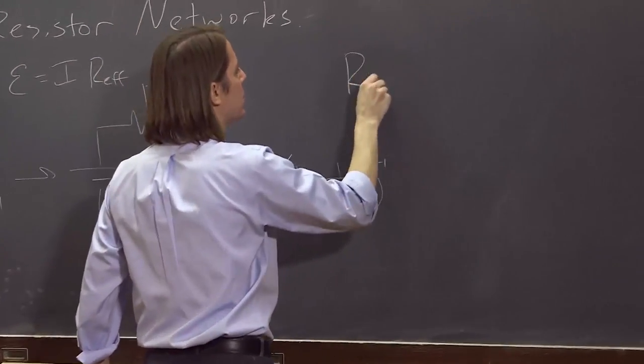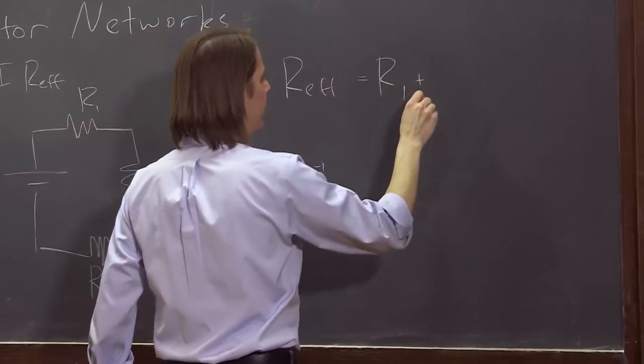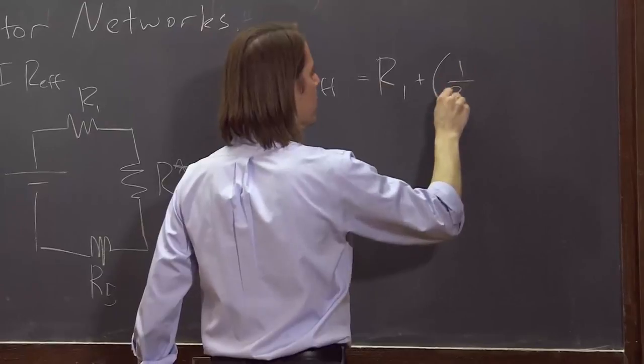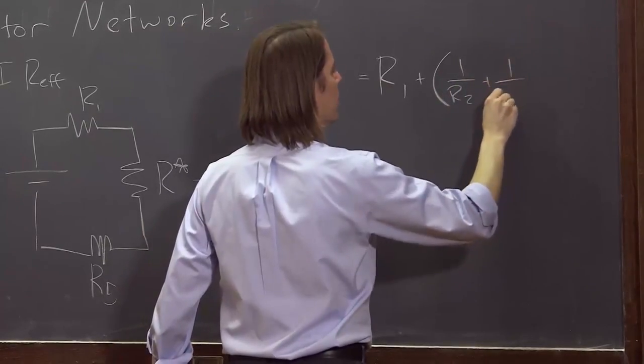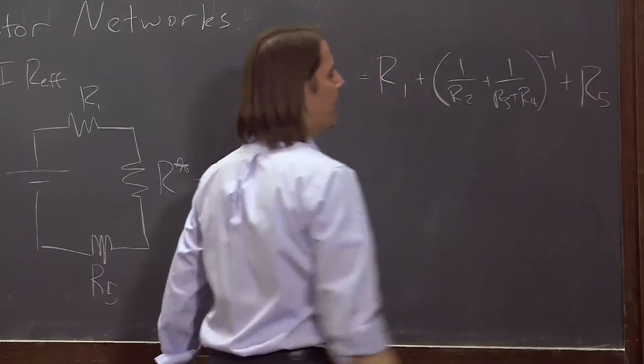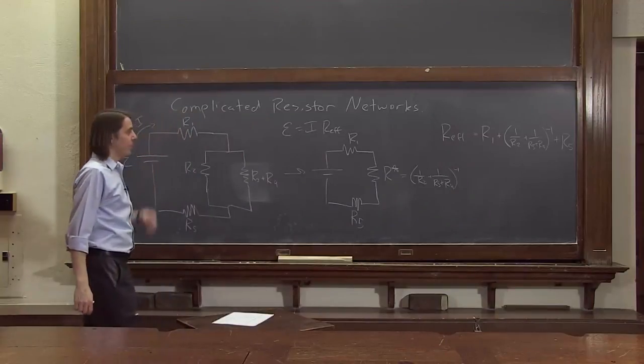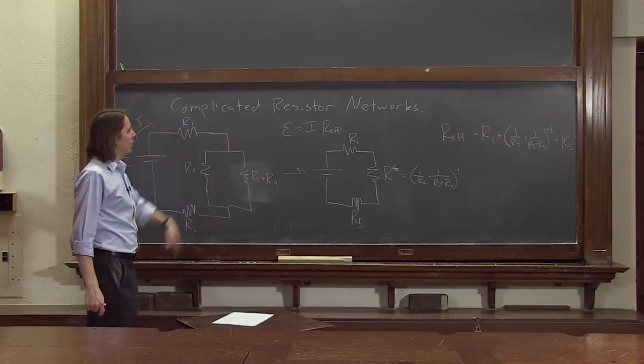So R effective is R1 plus one over R2 plus one over R3 plus R4 to minus one plus R5. And there we've put it all together to calculate R effective directly from R1, 2, 3, 4, 5.